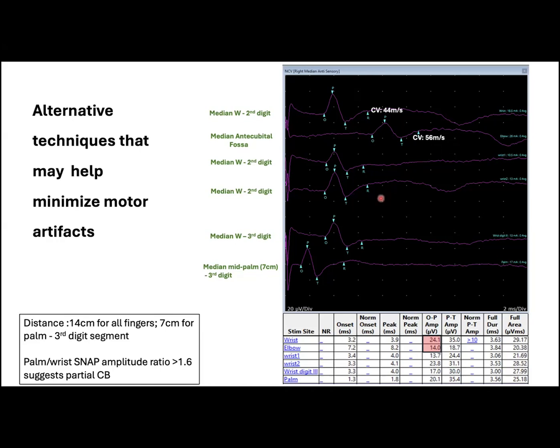We can see that with submaximal stimulation, the snap has reduced amplitudes, almost half the size of the first one, and conduction velocities that are a bit slower. And everything improves when we gradually increase the stimuli, as you can see here.